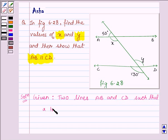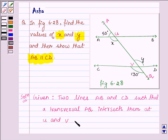a transversal, let us name this transversal as PQ, so a transversal PQ intersects them. It is named the point of intersections as U and V, so the transversal PQ intersects them at U and V respectively.